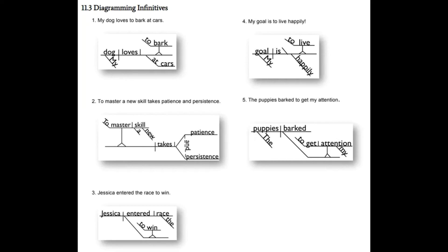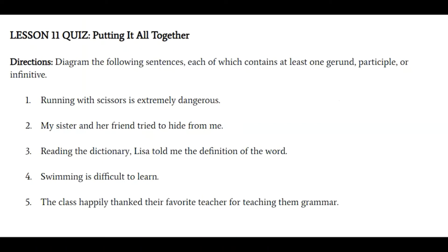Now let's move on to one last exercise combining all three verbals together. Some tips: if you see an -ing word, take a moment and figure out what part of speech it is — if it's a noun, it's a gerund; if it's an adjective, it's a participle. Also, if you see the word 'to,' decide if it's followed by a verb or by a noun or pronoun. If it's followed by a verb, you have an infinitive. Then figure out what part of speech it's functioning as and diagram it accordingly.